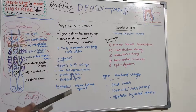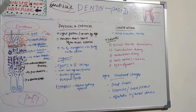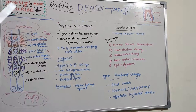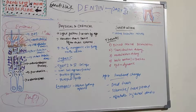The inorganic substance is basically calcium hydroxyapatite crystals. Type 1 collagen is the principal type of collagen found in dentine, and the inorganic crystals are plate-shaped and much smaller than hydroxyapatite crystals in enamel. Dentine also contains small amounts of phosphates, carbonates, and sulfates.